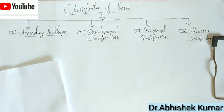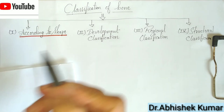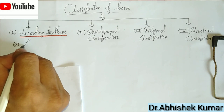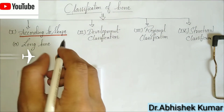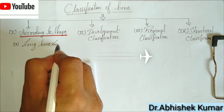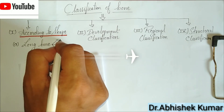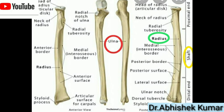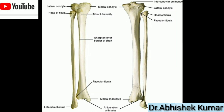Mainly we will talk about classification according to shape. First, the long bone. Each long bone has an elongated shaft called the diaphysis and two expanded ends called the epiphysis. It has three surfaces, three borders, a central medullary cavity, and a nutrition foramen directed away from the growing end. Typical long bone examples are humerus, femur, radius, tibia, and fibula.